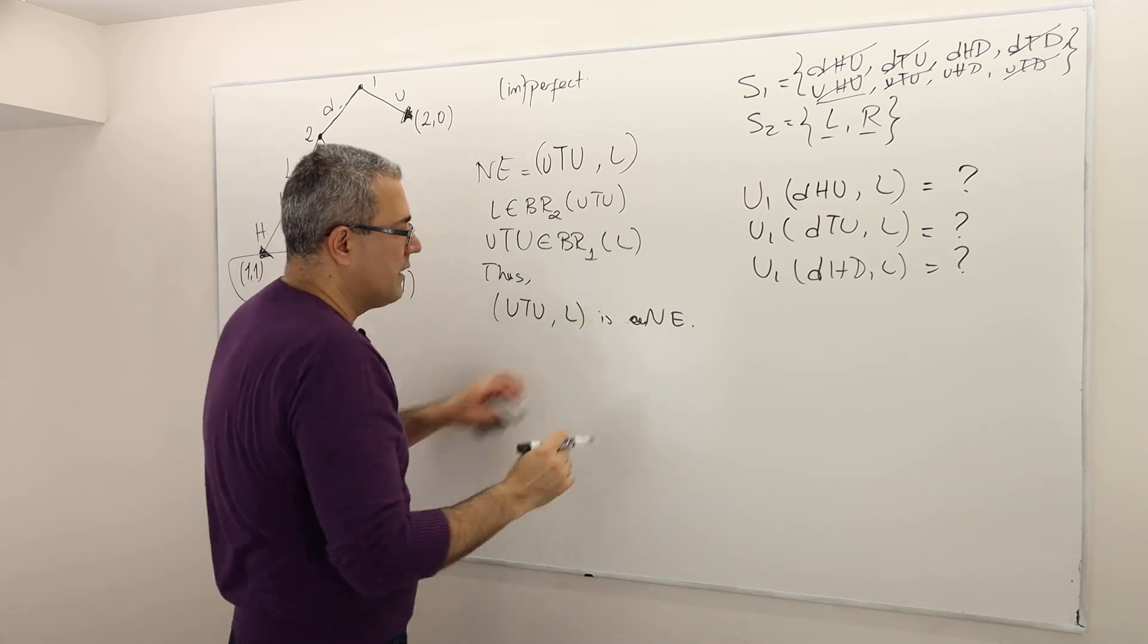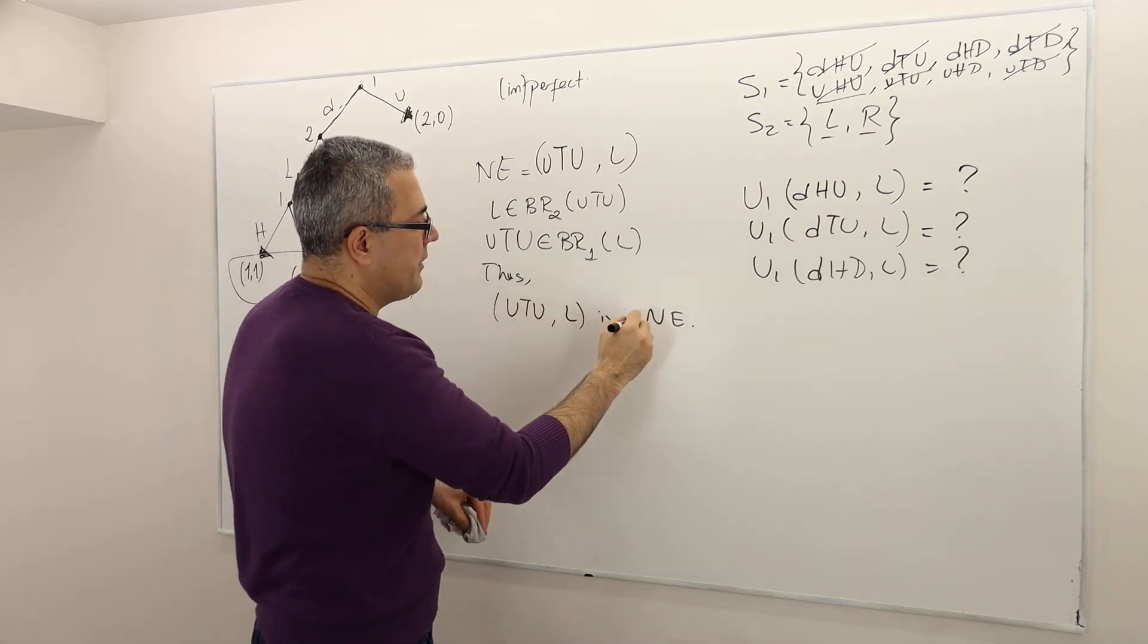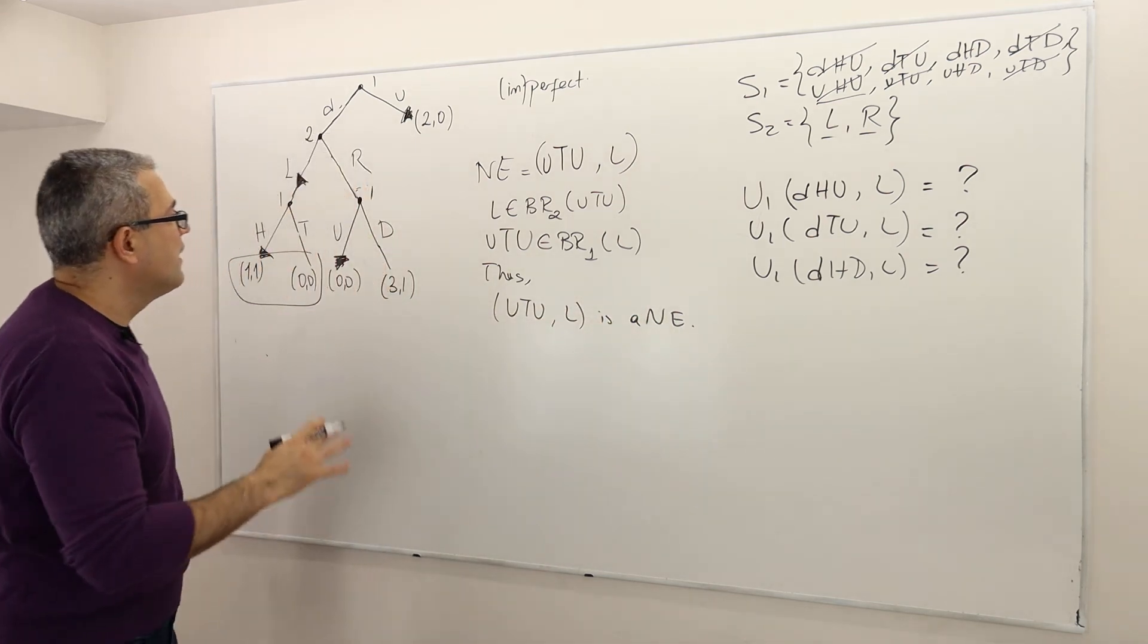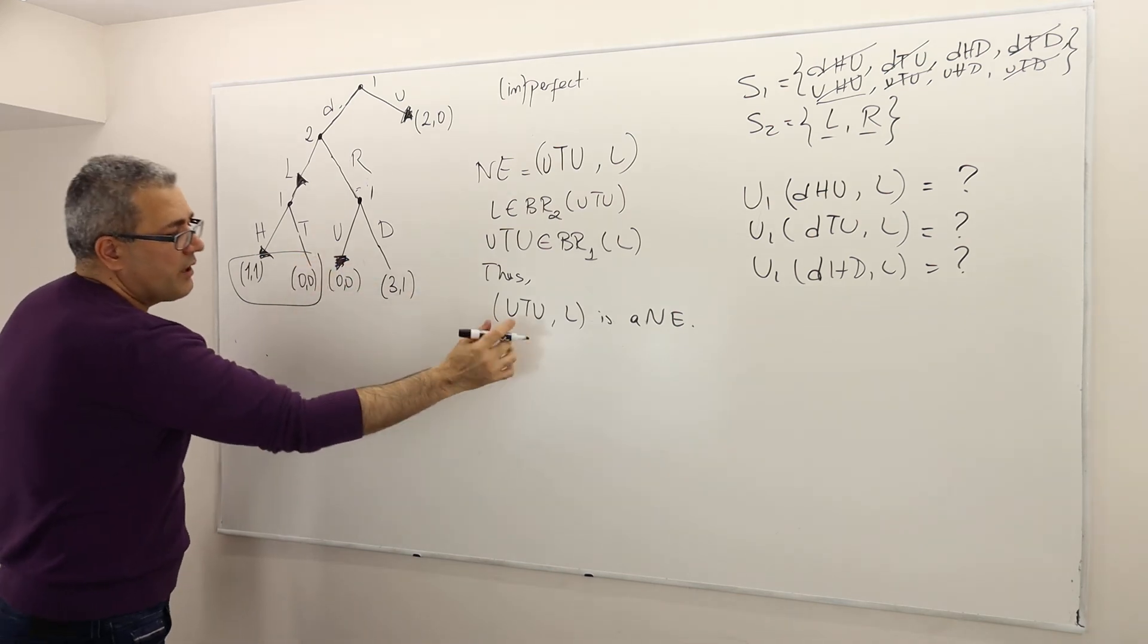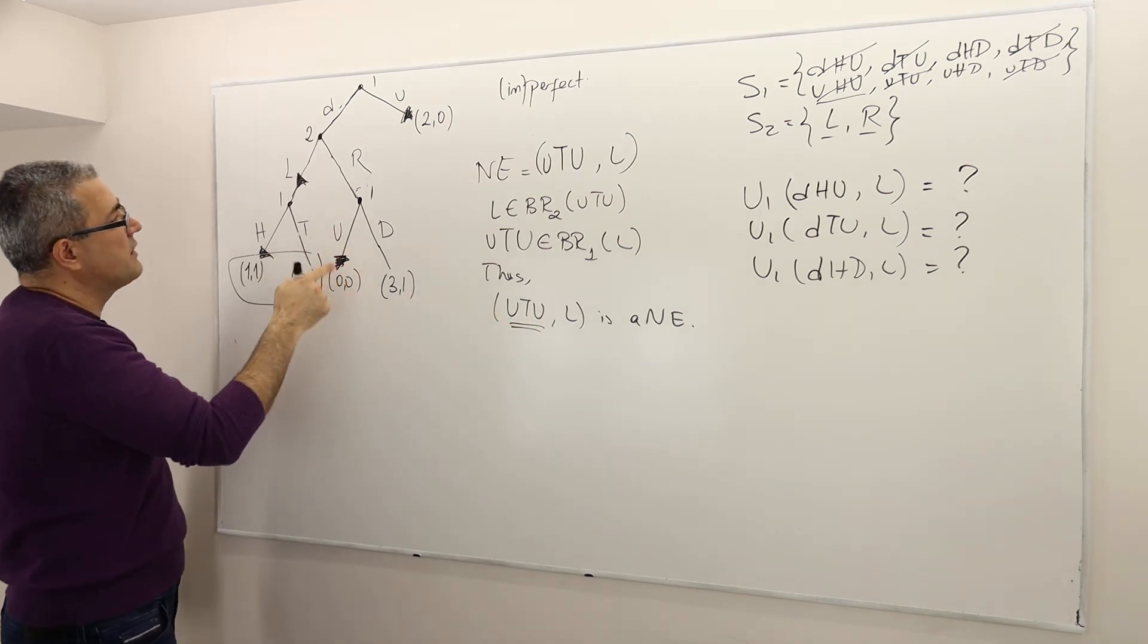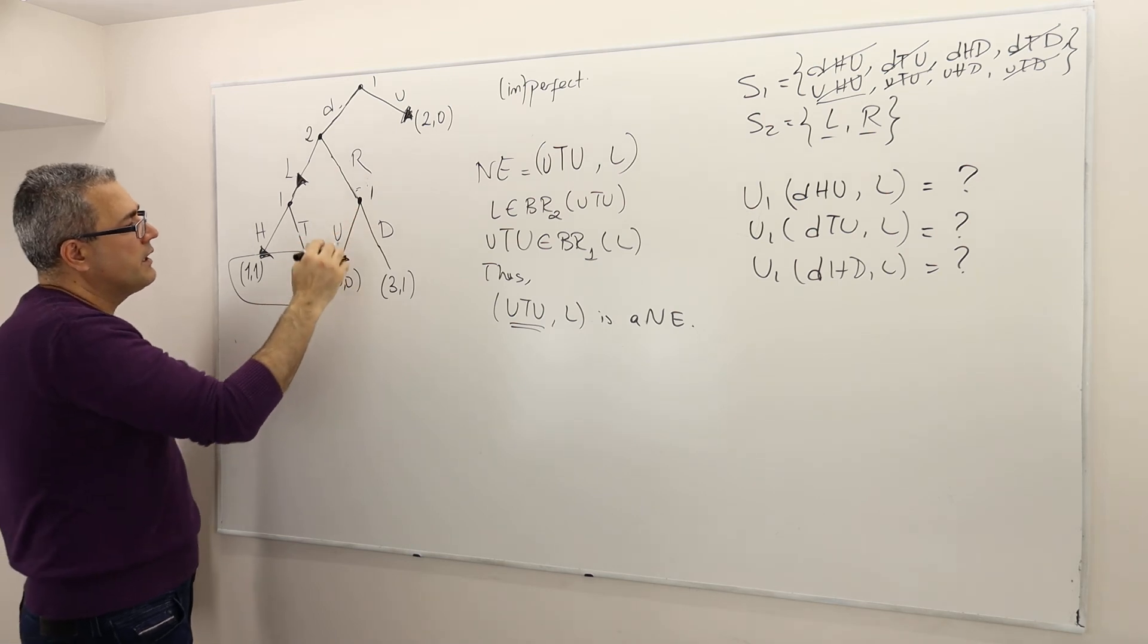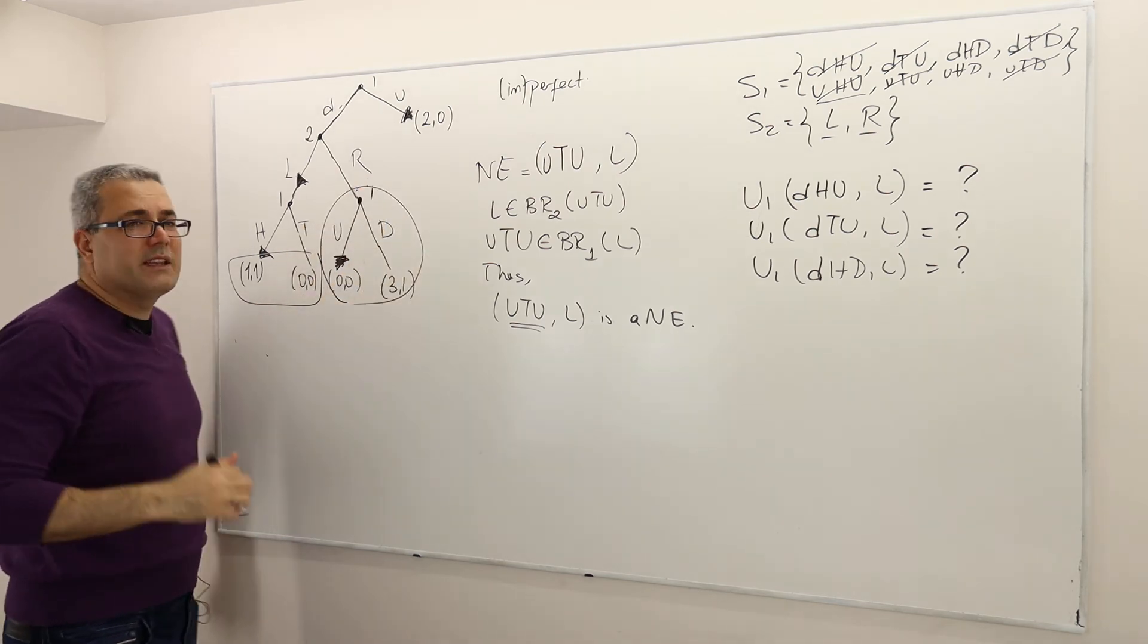Are they SPNE? No, they are not SPNE. Well, why is that? The answer is simple. Because here, the strategy UTU says player two, one, I'm sorry, player one is going to play U here. But let's ask. I know player one is going to finish here. And so I shouldn't worry about here.